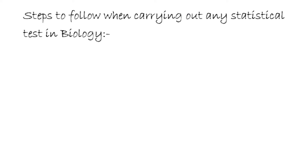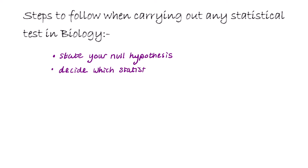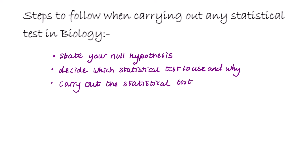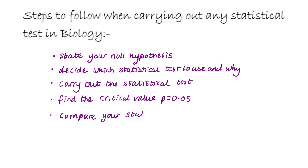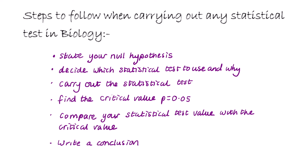There are steps to follow when carrying out any statistical test. First you have to state your null hypothesis. Then decide which statistical test to use and why. Carry out the statistical test. Find the critical value at p equals 0.05. Compare your statistical test value with the critical value and write a conclusion, and reject or accept the null hypothesis.